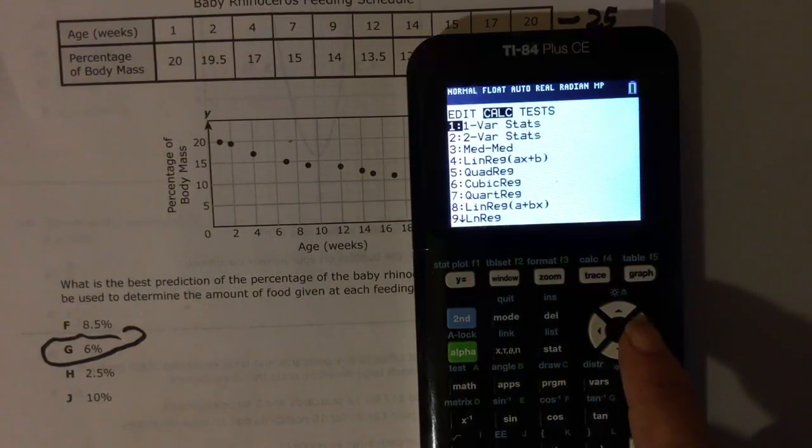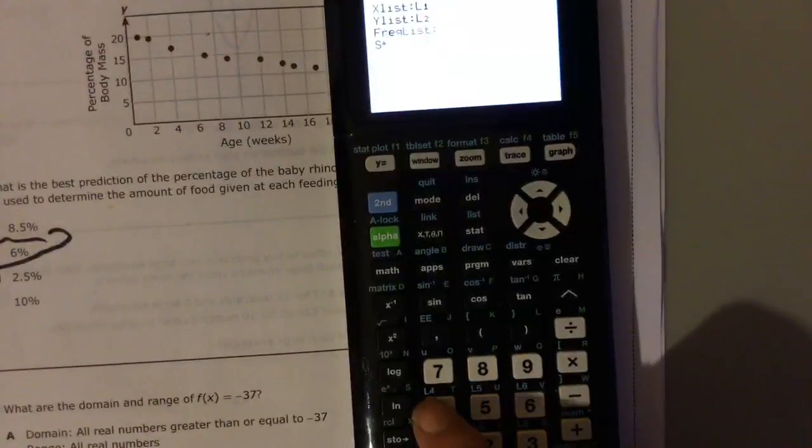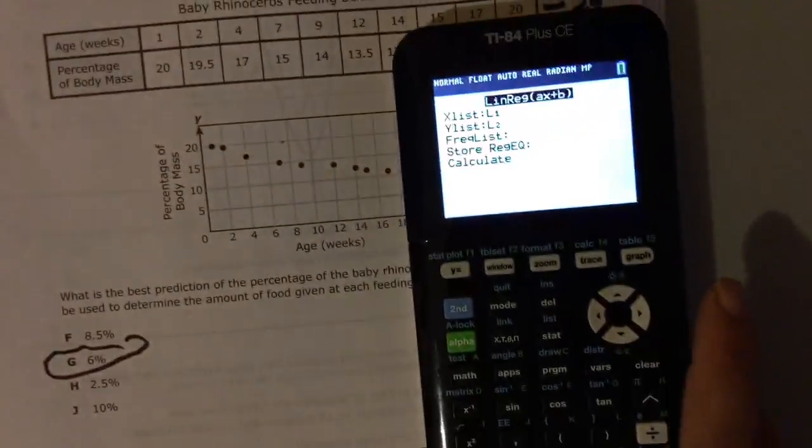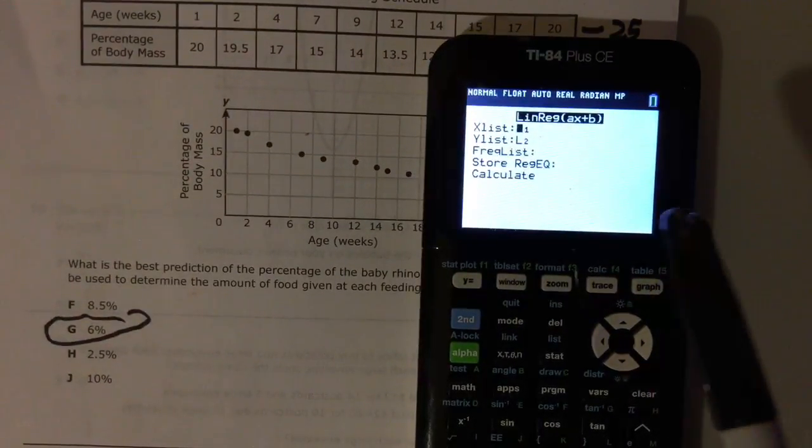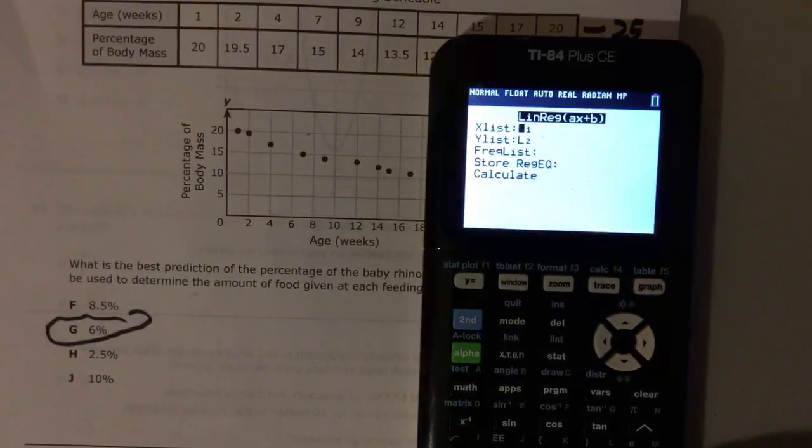They said it's a linear function so what I do is I just hit number 4. Now once you hit 4, that's your linear regression, Y equals AX plus B. We're going to scroll down.